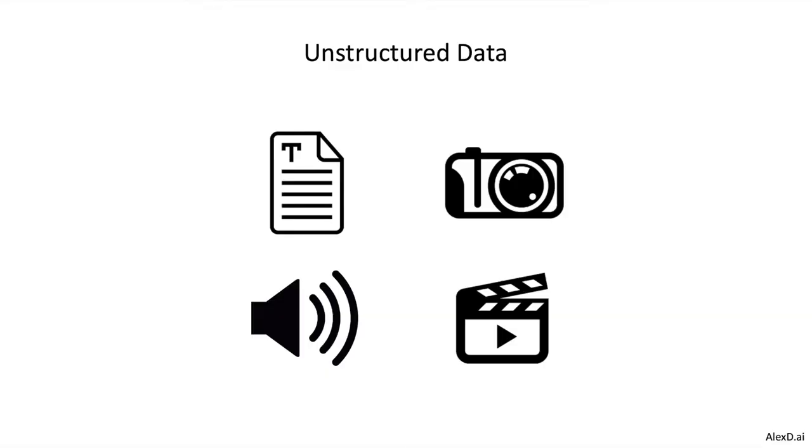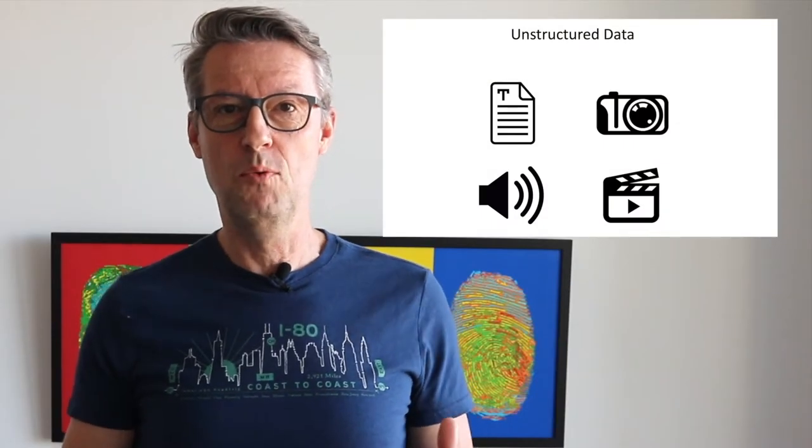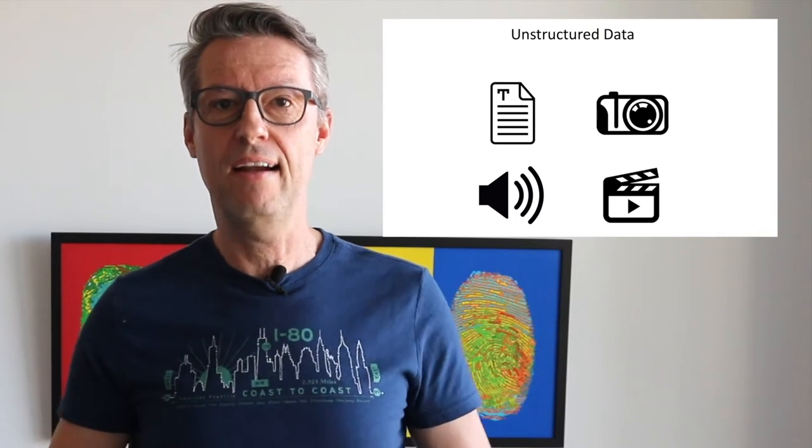But what is the opposite of structured data? It's unstructured data. What kind of data are we talking about? We are talking about text — free text. We are talking about images. We are talking about sounds — sounds that could be created by a person like me speaking, but could also be music, for example. And we are talking about videos, which are a mixture of images in motion and sounds. All of these kinds of data we say are unstructured data.